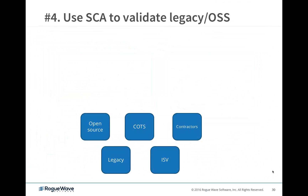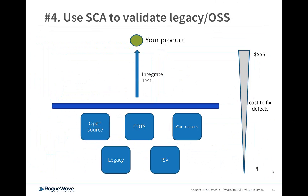The fourth best practice is using static code analysis to validate legacy code and open source in your code base. You've probably got code from contractors, offshore development partners, ISVs, and legacy code that's been around for years. In fact, you're probably writing only 10 to 15 percent of the code going into your system — the rest comes from somewhere else. SCA can test and validate all that other code to make sure you understand the critical defects and can work with or around them before putting them into your code base, since it's much cheaper to fix early in development than once you're in production.